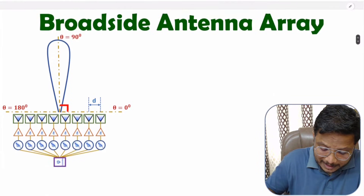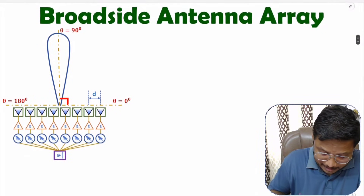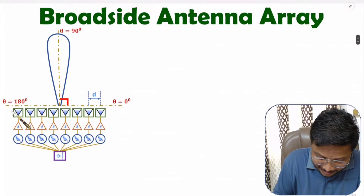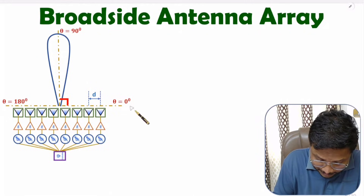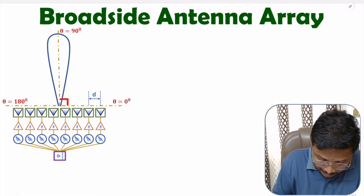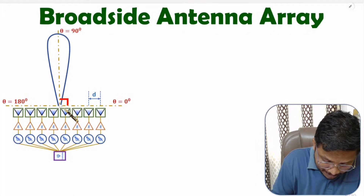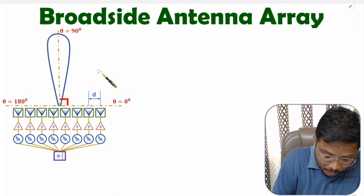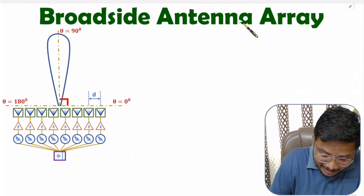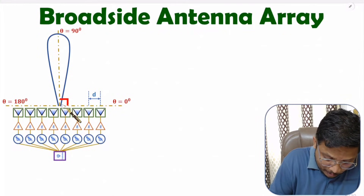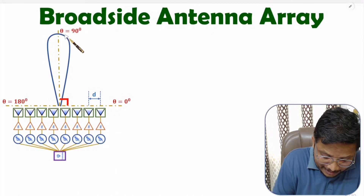When you talk about broadside antenna array, here you can observe we have the antenna array and this is the axis of the antenna array. Radiation is happening at a 90-degree angle with respect to the axis of the antenna. So in broadside antenna array, the maxima location is at theta equals 90 degrees.